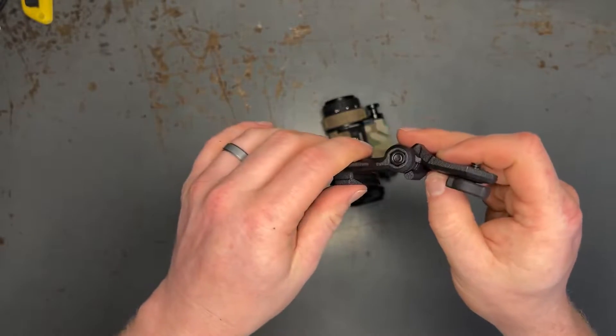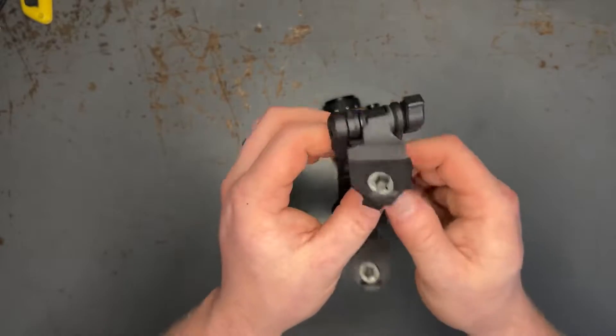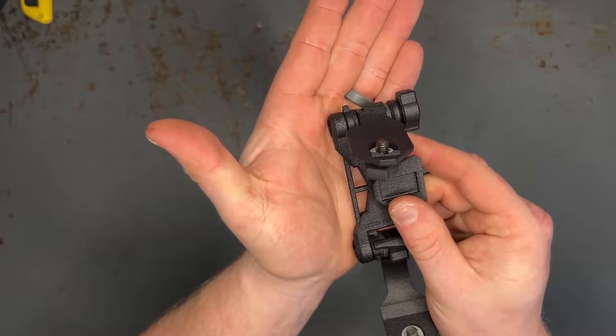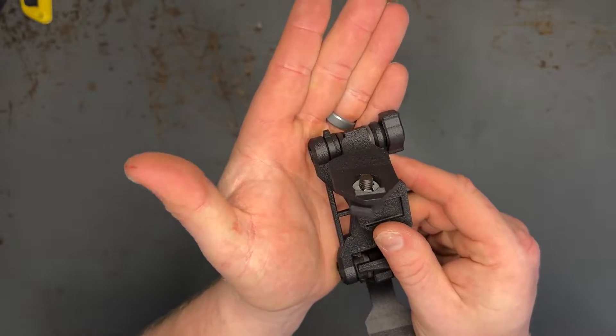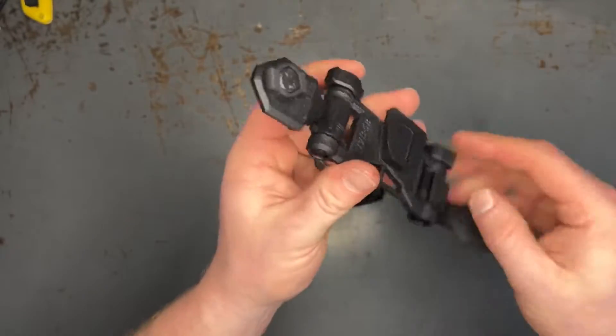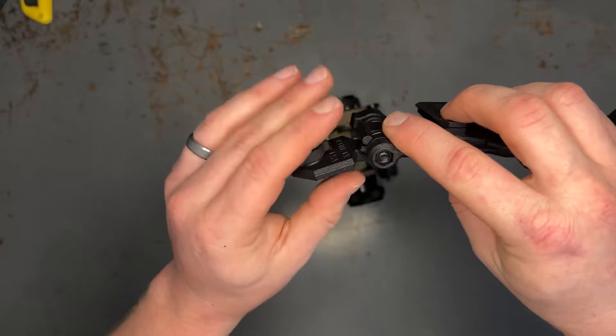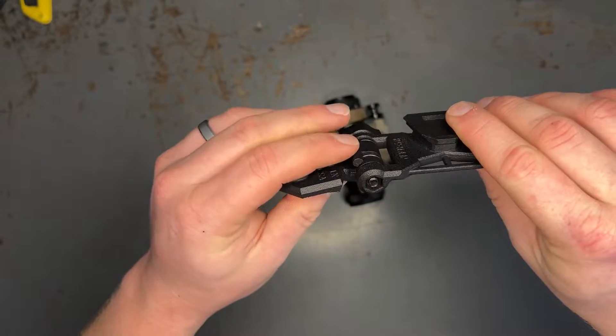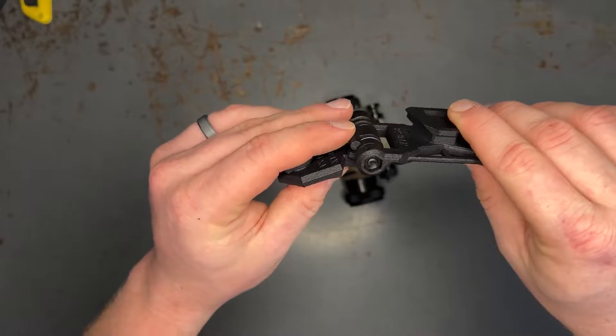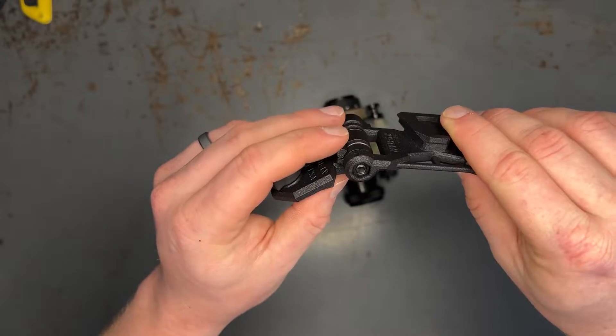The first major thing that we added was an IPD stop, and you can see right here there is a little nub that sticks off the main bridge itself and that interfaces with this arm that attaches to the arm of the device. So when this contacts that, it gives you the signal to stop turning.